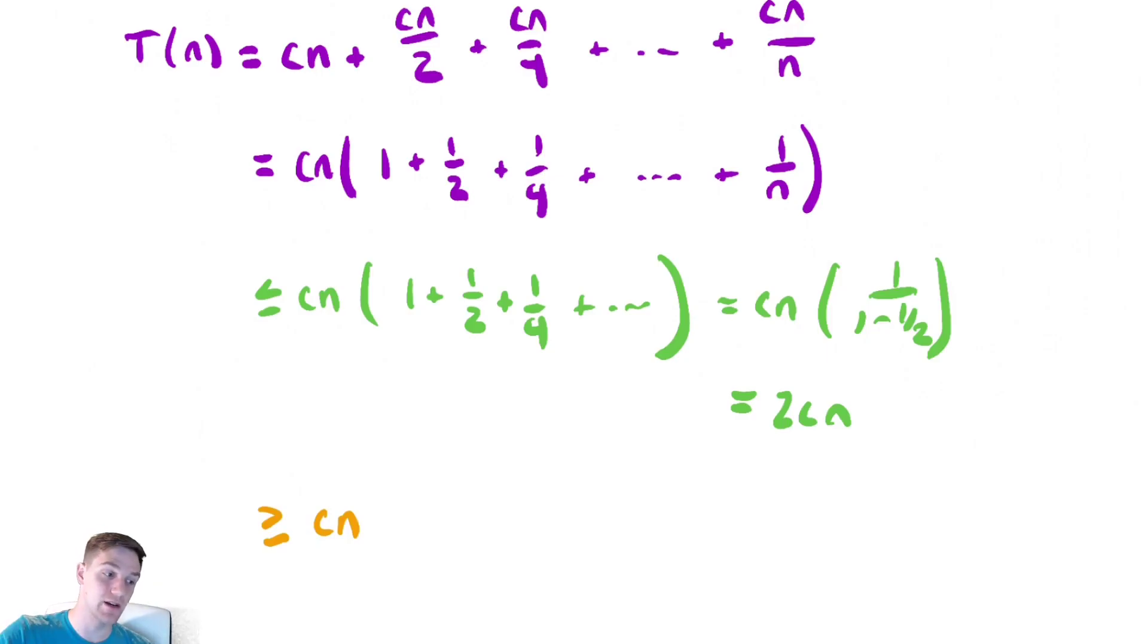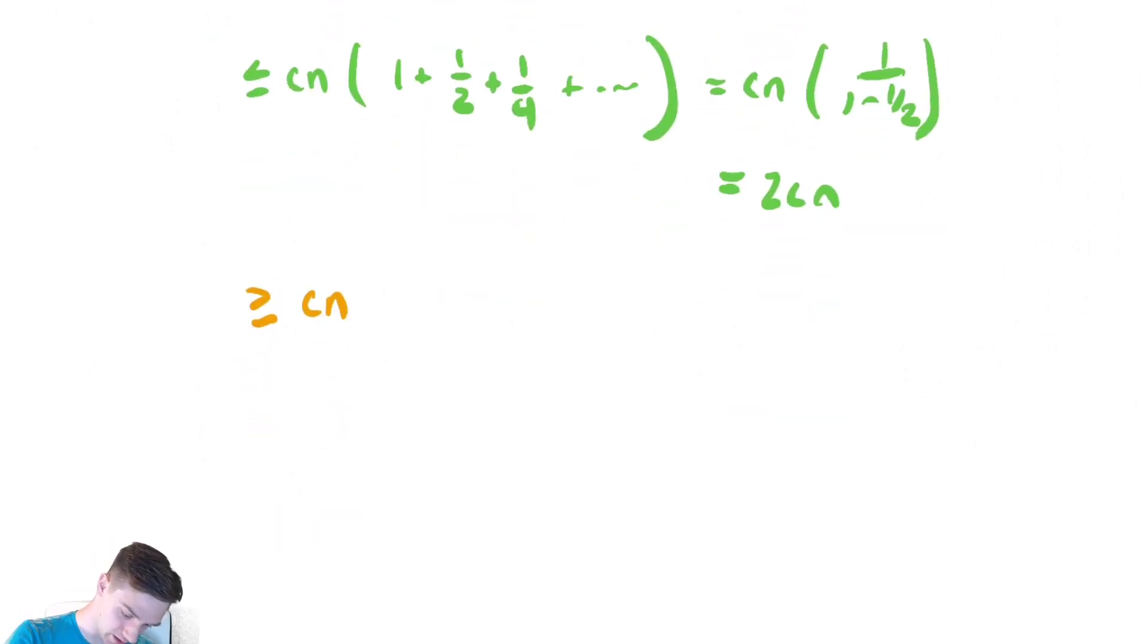So it's bounded above by 2 cn, bounded below by cn. Therefore, it must be in theta of n. So T of n is in theta of n.